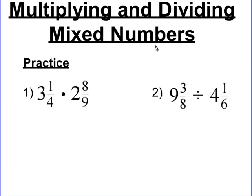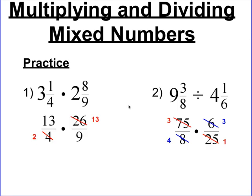Okay, let's try some practice. Hit pause on your video and try these two problems. When you're done, hit play and I'll have the answers up here for you and explain how to do everything. For step 1, we made improper fractions and simplified. You can see 4 times 3 is 12, plus 1 is 13. And 9 times 2 is 18, plus 8 is 26. Then I noticed that 26 and 4 are both even, so they can be divided by 2, so I simplified them.